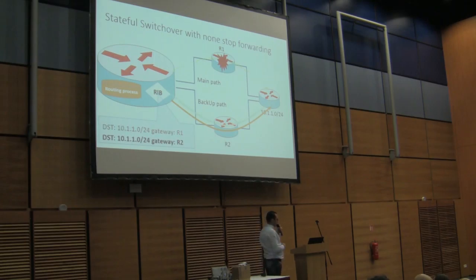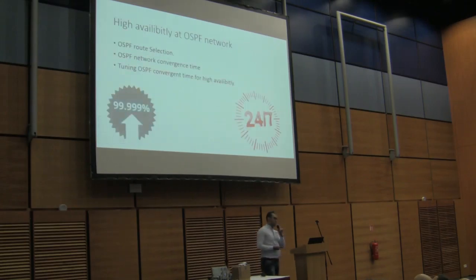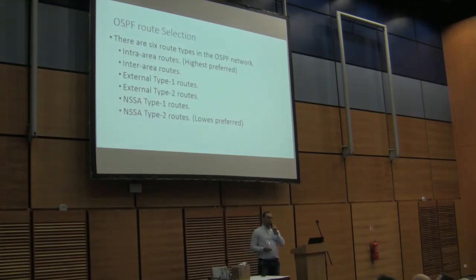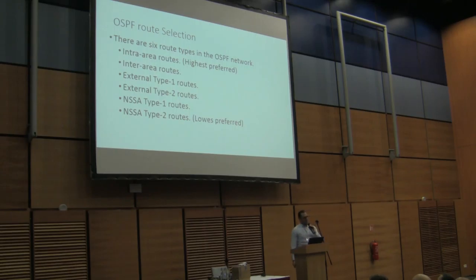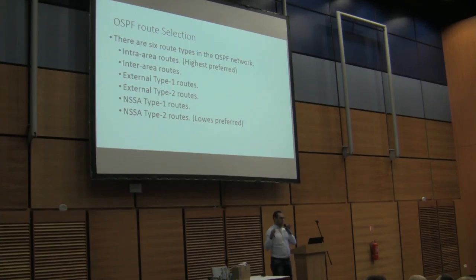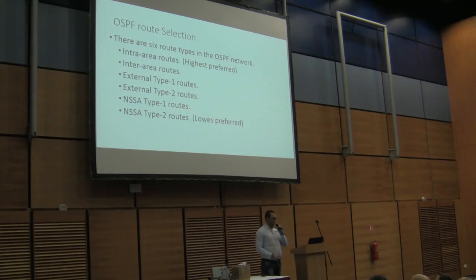Now let's talk about OSPF. First, OSPF route selection: OSPF is a link-state routing protocol. It first discovers the whole network and builds a visual topology. Several routes will be injected into our OSPF network. OSPF deals with routes based on its domain structure. If a route is injected into a local area, that local area route is highest preferred. If routes come from other areas, or from external sources, they are classified as external Type 1 or Type 2. There may also be external routes injected from stub areas.